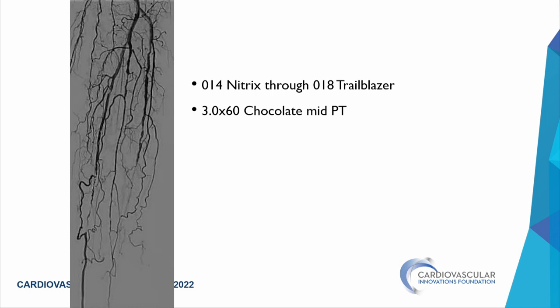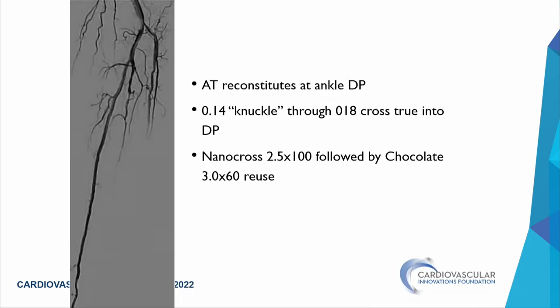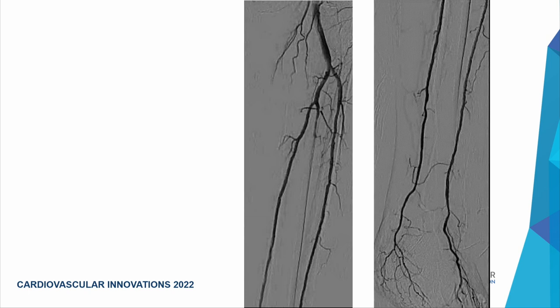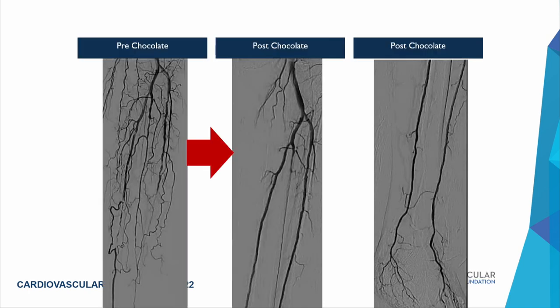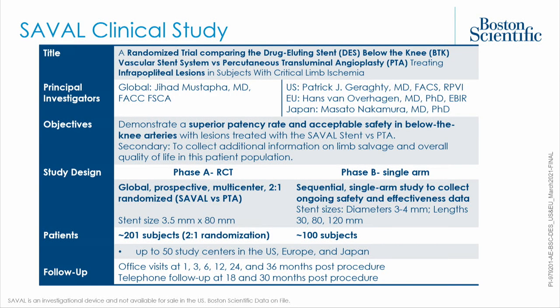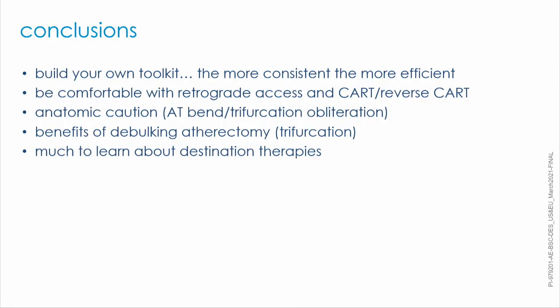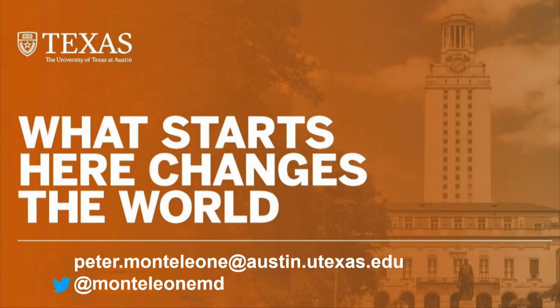In a case with PT, peroneal, and AT occlusions, sequential wiring and ballooning of each vessel yielded full runoff to the foot. The Saval self-expanding stent based on Alluvia technology integrated into balloon intervention is awaited for further data. In conclusion, a consistent toolkit is the most efficient approach. Be comfortable with retrograde access and with CART when needed. Be aware of anatomic cautions at the AT bend and obliterated trifurcations. There is much more to learn about our final treatments below the knee.